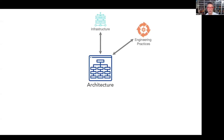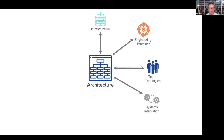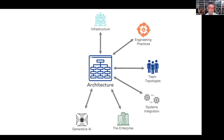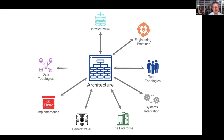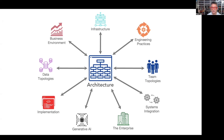What this class does is look at software architecture and its intersection with nine different parts of the software development ecosystem: infrastructure, engineering practices, team topologies, system integration, the enterprise, generative AI, implementation, data topologies, and the business environment.